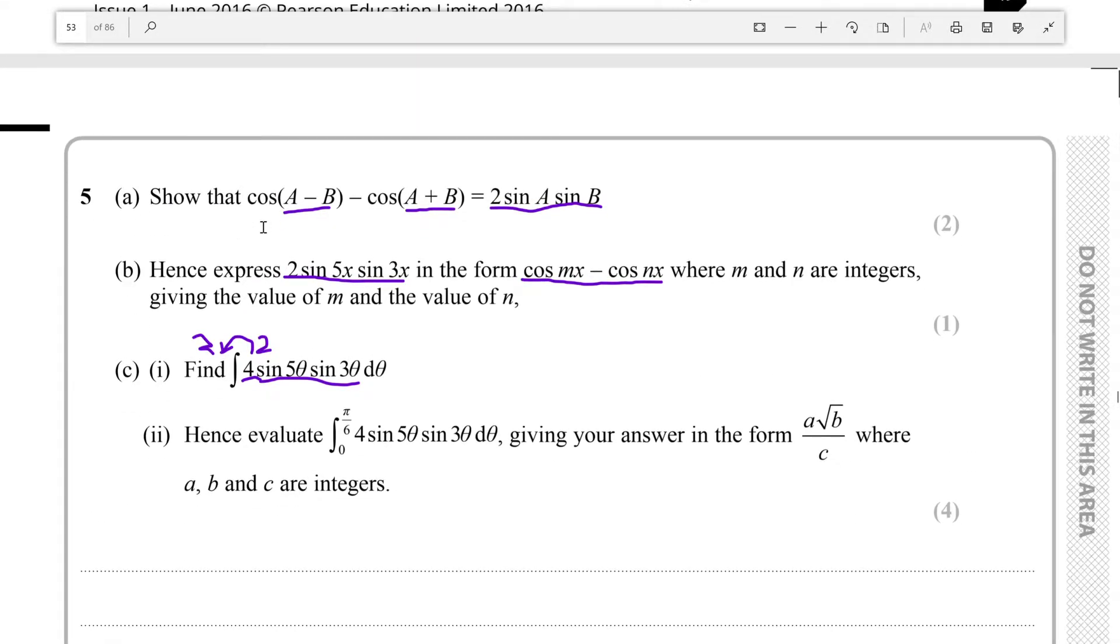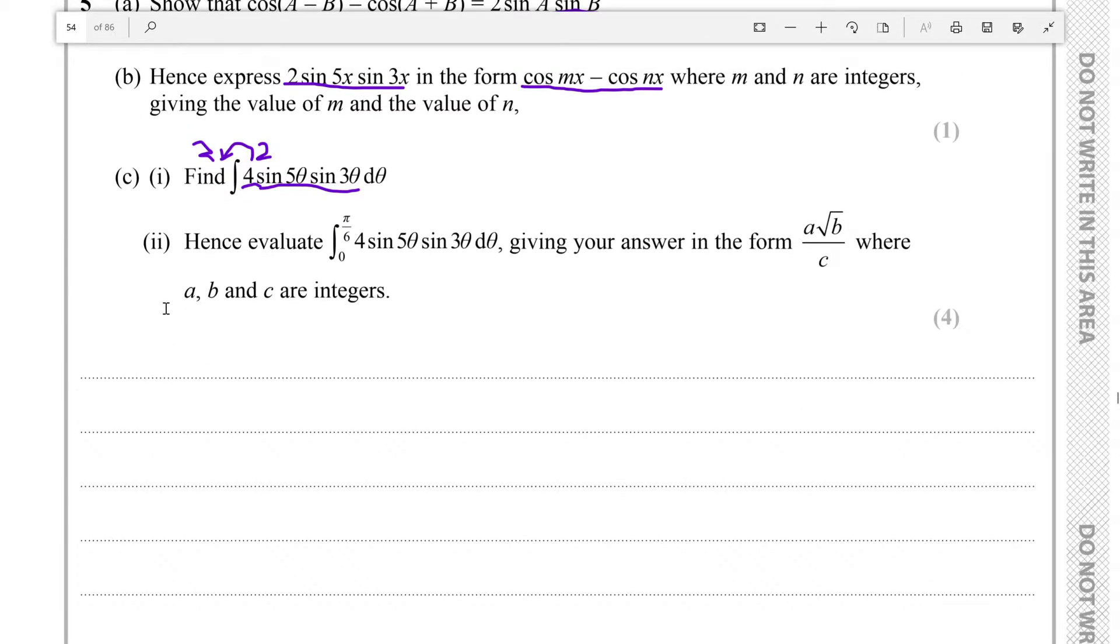Show that cos(A-B) - cos(A+B) is 2sinAsinB. We have the identity that cos(A±B) is cosAcosB ∓ sinAsinB. That just means if this is a plus, this is a minus, and if this is a minus, this is a plus. So let's find cos(A-B) - cos(A+B). Cos(A-B) would be cosAcosB + sinAsinB.